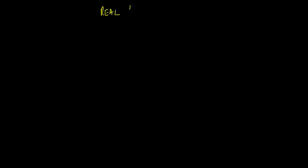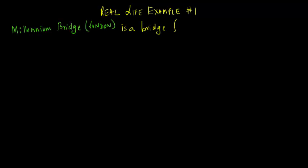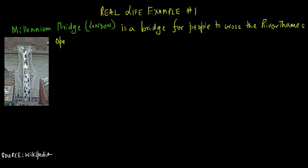Let us talk about some real life examples in this lecture. The first example will be the beautiful Millennium Bridge which is in London. It is a bridge for people to cross the river Thames. It is a nice beautiful bridge which opened on the 10th of June 2000.